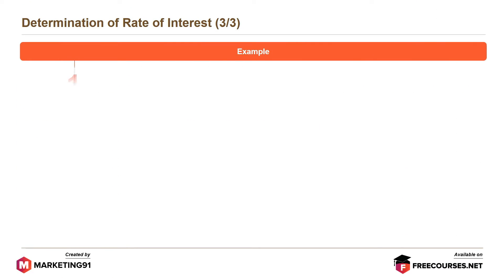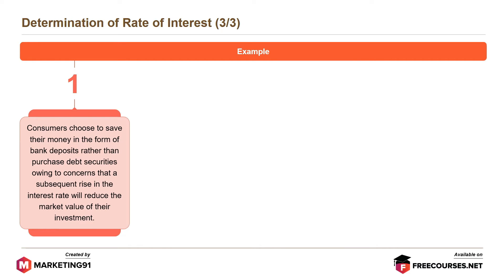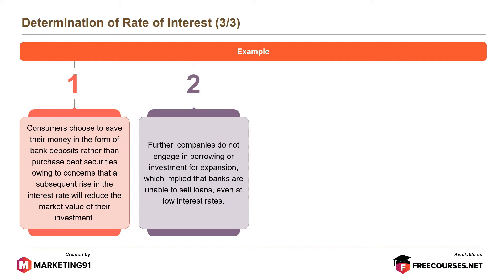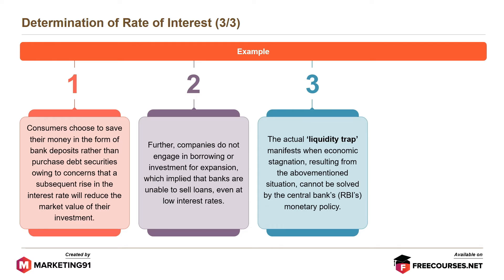For example, consumers choose to save their money in the form of bank deposits rather than purchase debt securities, owing to concerns that a subsequent rise in the interest rate will reduce the market value of their investment. Further, companies do not engage in borrowing or investment for expansion, which implies that banks are unable to sell loans even at low interest rates. The actual liquidity trap manifests when economic stagnation resulting from the above-mentioned situation cannot be solved by the central bank's (RBI's) monetary policy.